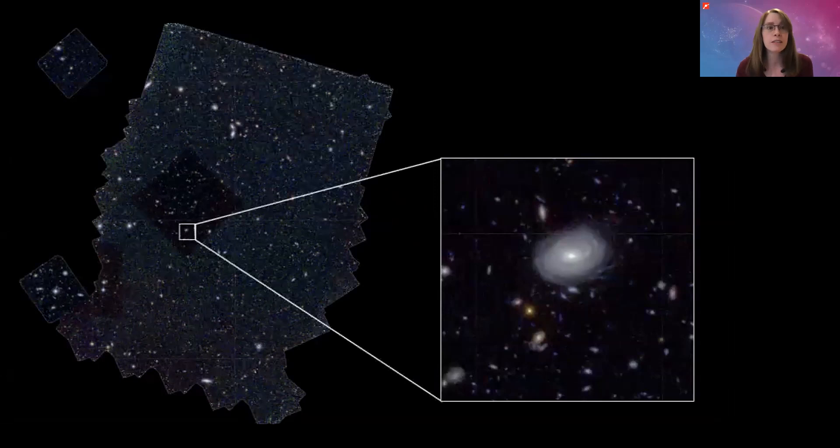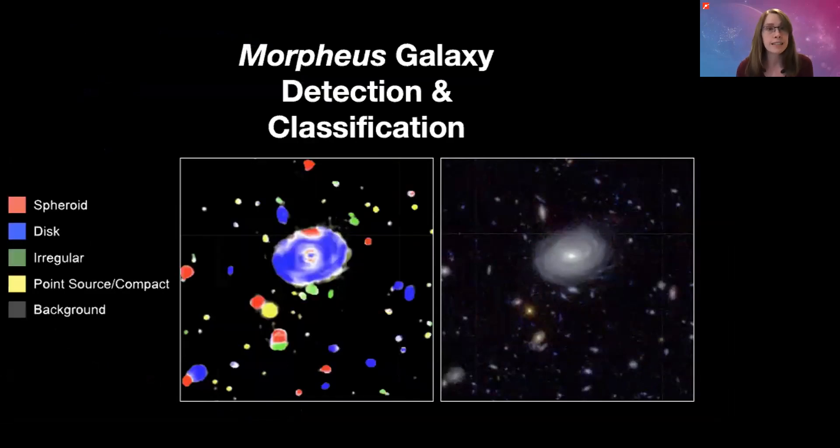The goal was to go from this raw astronomical image to a map of galaxies. Here you can see that Morpheus, the program, has identified this big galaxy in the middle as a disk galaxy, which I would agree with because I think I see some spiral arms in there. And it's also picked out several spheroid galaxies in red, more disk galaxies in blue, some irregular galaxies in green, and then also some yellow point source objects, which are actually stars.